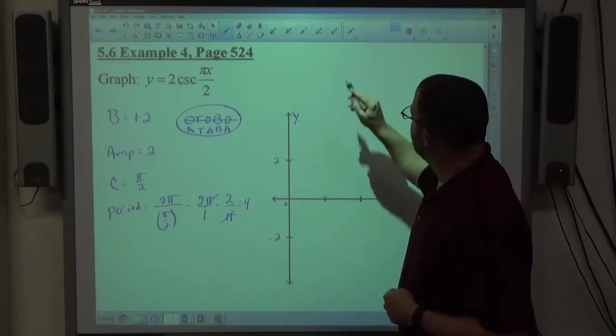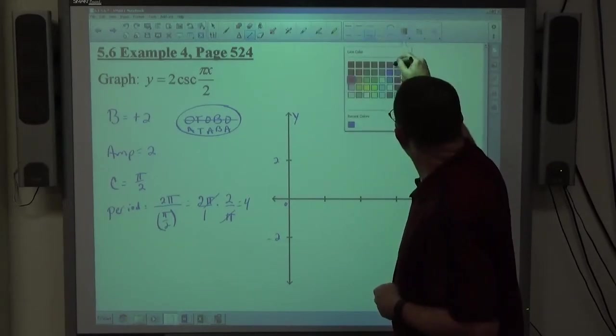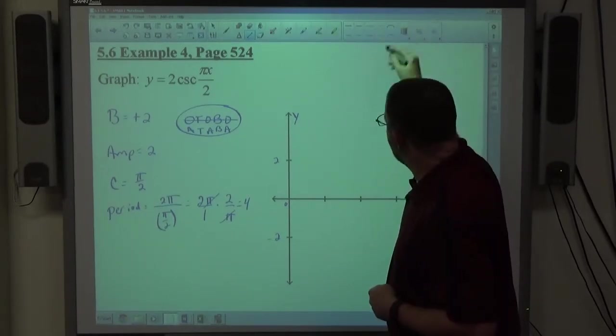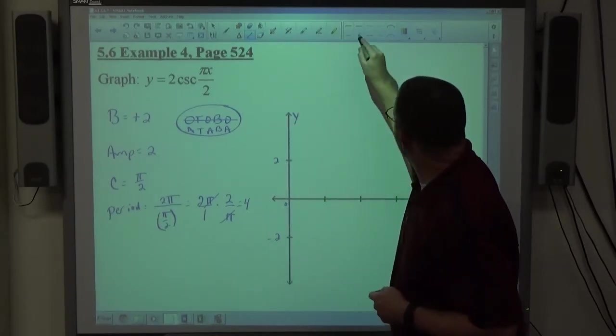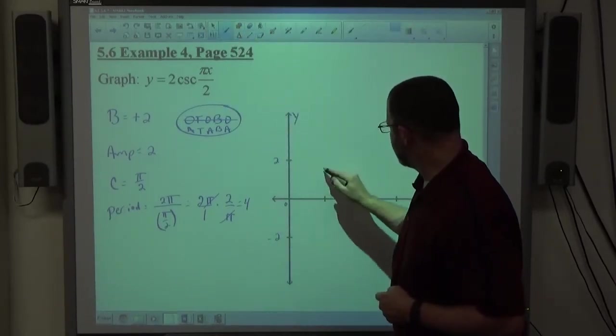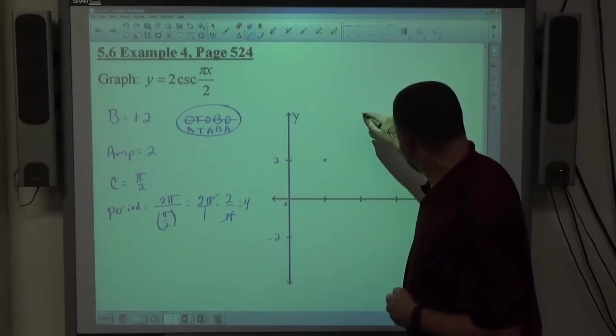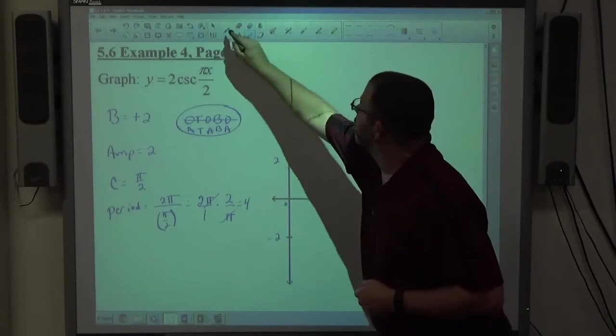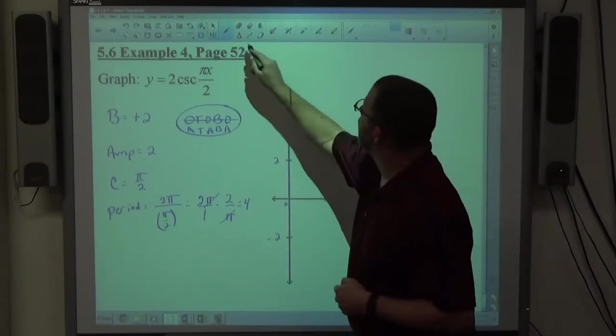Then I need to do asymptote. Asymptote at there, and then goes to the top point, which is here, and then goes to asymptote again, and goes to a bottom point down here, and finally goes to an asymptote again.